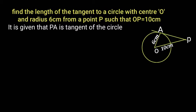It is given that PA is a tangent of the circle. OP is equal to 10 cm and OA is equal to 6 cm.